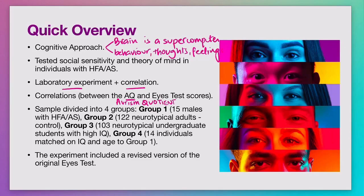Before discussing the Eyes Test itself, here is a quick definition of autism. Autism is a developmental disorder and the onset is usually in the early years of life. It is characterized by very repetitive, inflexible patterns, adherence to routine, as well as social deficits — which are basically difficulties in understanding and responding to verbal and nonverbal cues. These are some of the main characteristics of autism.